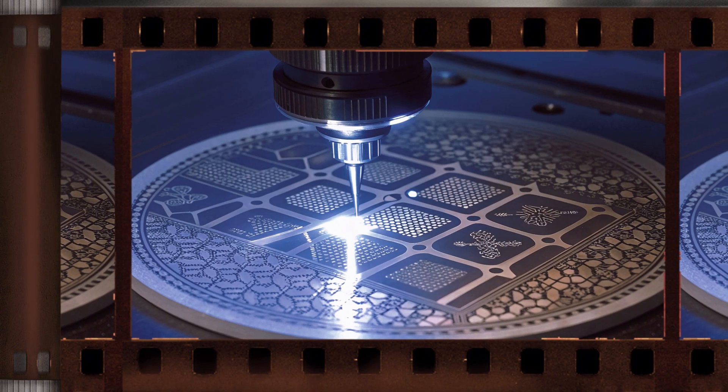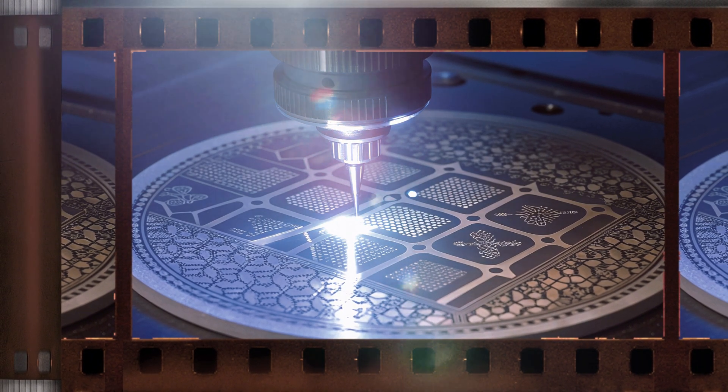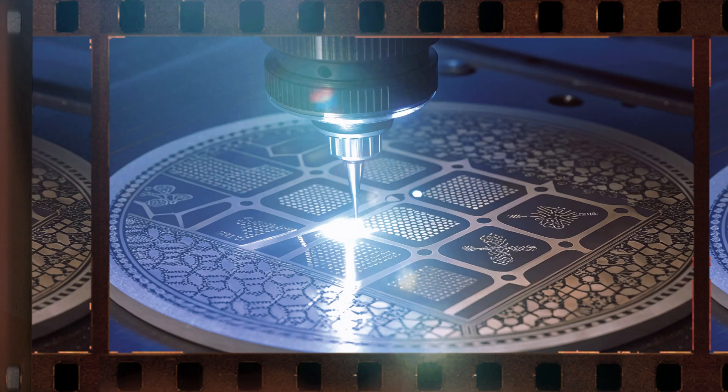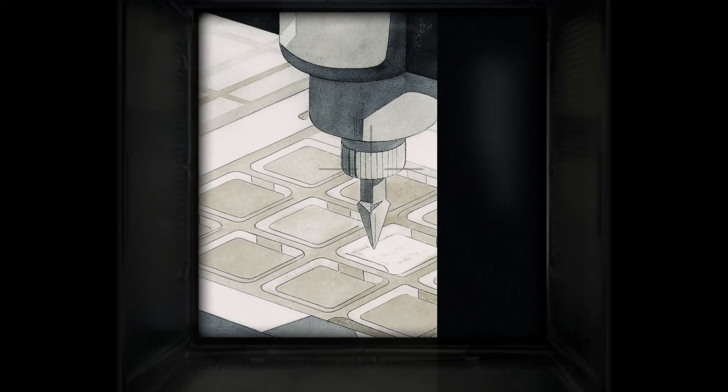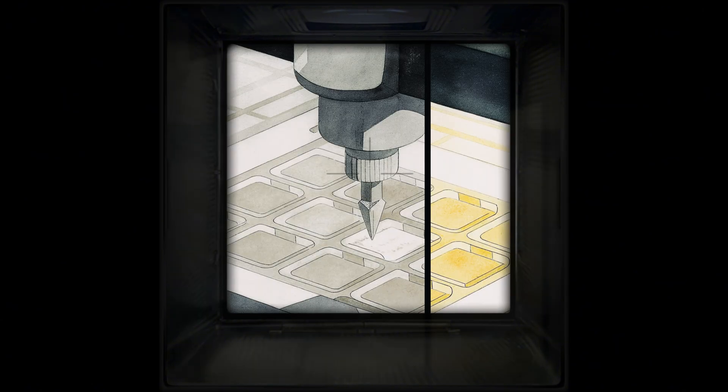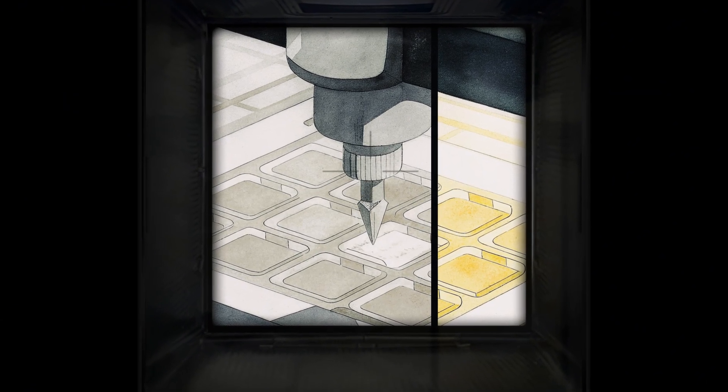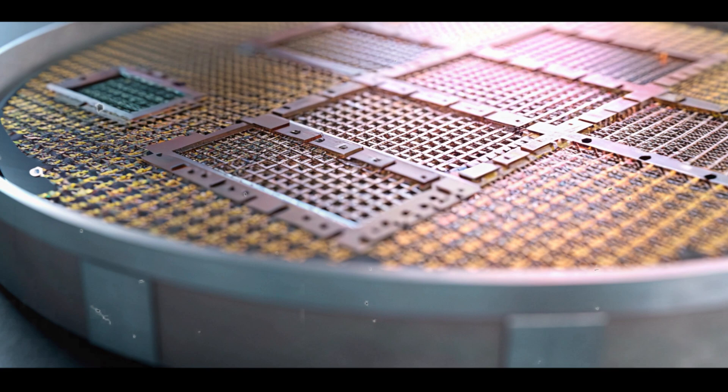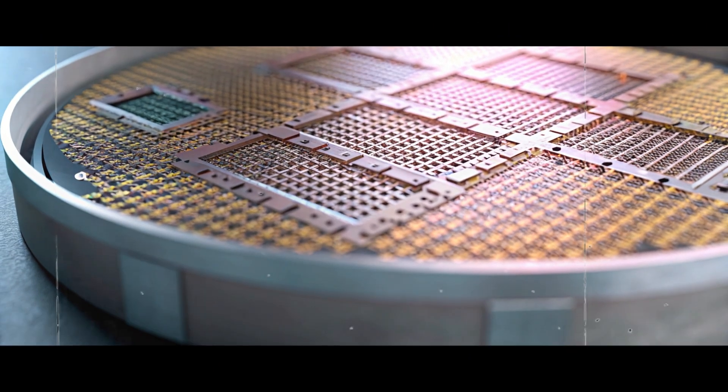The exposed sections go through chemical development, which removes unwanted material. The remaining areas are etched with acid, leaving behind the intricate pattern needed for circuits. Afterward, the leftover coating is washed away.